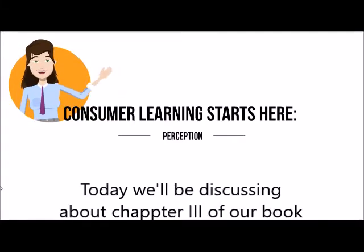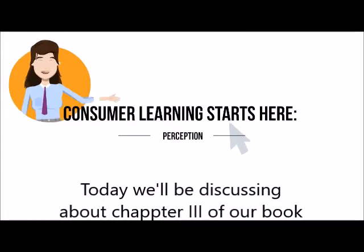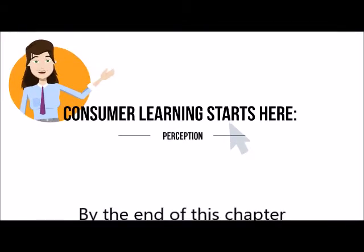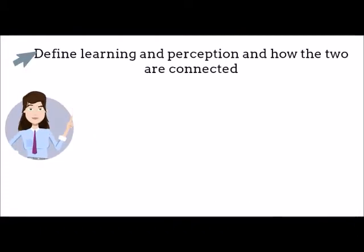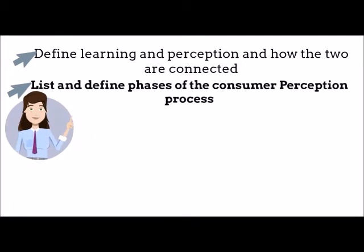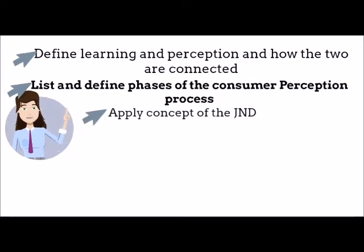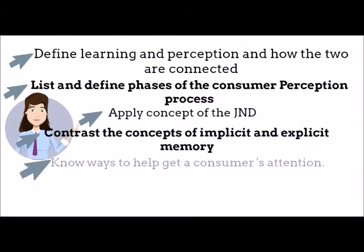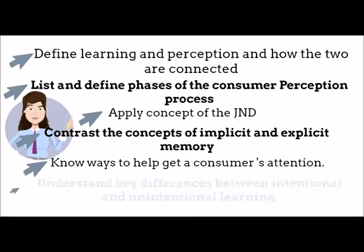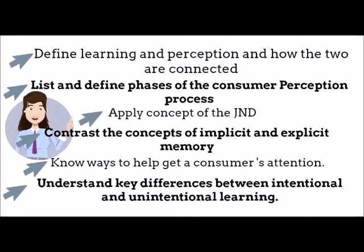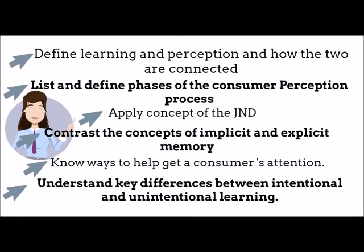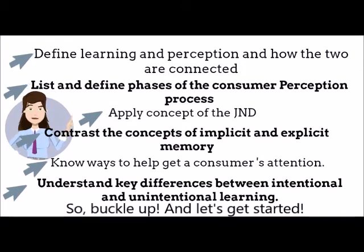Hello guys, good day. Today we'll be discussing a chapter of our book, Consumer Learning Starts Here: Perception. By the end of this chapter, the students will be able to define learning and perception and how the two are connected, list and define phases of the consumer perception process, apply the concept of the JND, contrast the concepts of implicit and explicit memory, know the ways to help get a consumer's attention, and understand key differences between intentional and unintentional learning. So buckle up and let's get started.